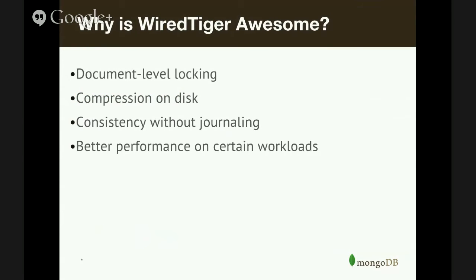Some of the things that make WiredTiger awesome: first, document-level locking. WiredTiger also has compression on disk enabled by default. You can have consistency without using journaling, which can give you better write throughput and better performance on certain workloads.